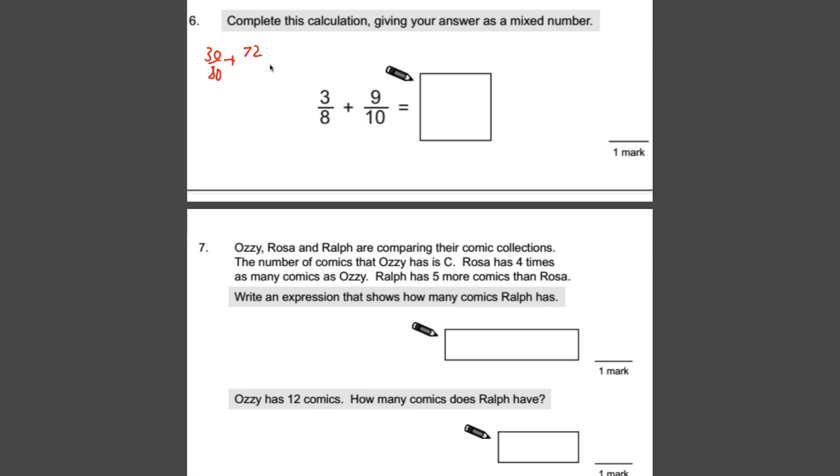Nine times eight is 72, and eight times ten is 80. Now we can add them together because these are equivalent fractions to these ones, but they have the same denominator. Now we just need to add them together. So 30 eightieths adds 72 eightieths is 102 eightieths because, remember, we never add the denominator together.